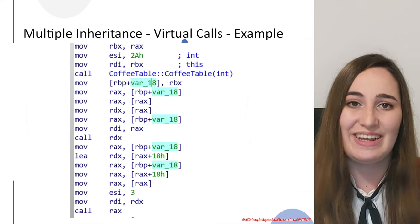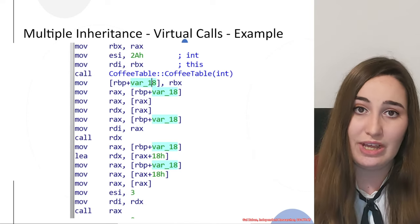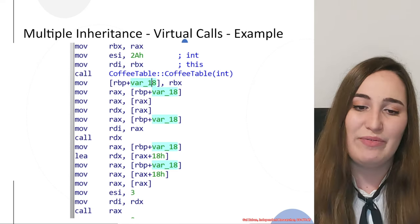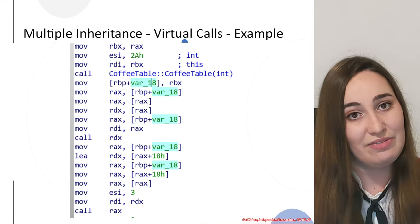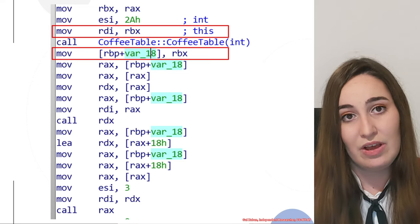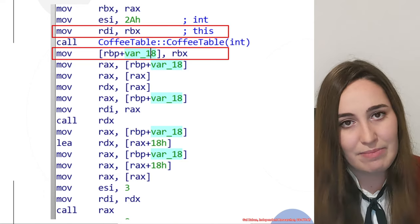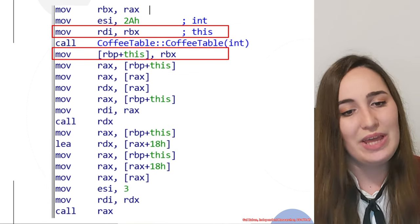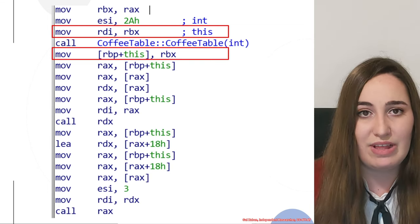So let's dive into an example, and that will actually make the virtual calls of multiple inheritance much clearer. In this case, we have the coffee table object again that you are familiar with from previous videos. We would examine the assembly to understand the virtual calls. What we would see is that the this pointer of the coffee table would be stored in var_18, and we can rename this variable so it would be easier to work with the assembly.